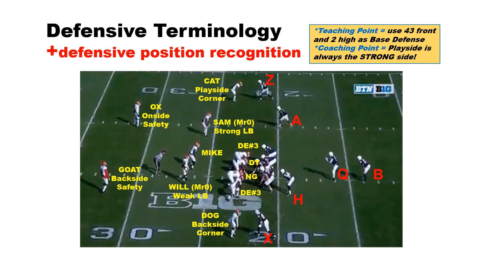Next is defensive terminology. We're going to treat everything as some version of a 4-3 defense with two high safeties to start. From the play side — if the play side is to the right — the Cat is the play side corner, and the Ox is the onside safety. Then we have the Sam as the strong backer, Mike in the middle, and Will weak. Dog is the backside corner, and Goat is the backside safety. We've also got two defensive ends we call number threes, and then a D-tackle and a nose guard.